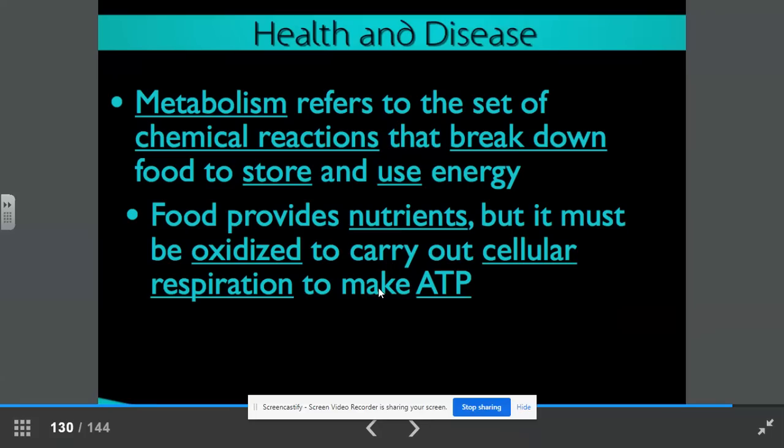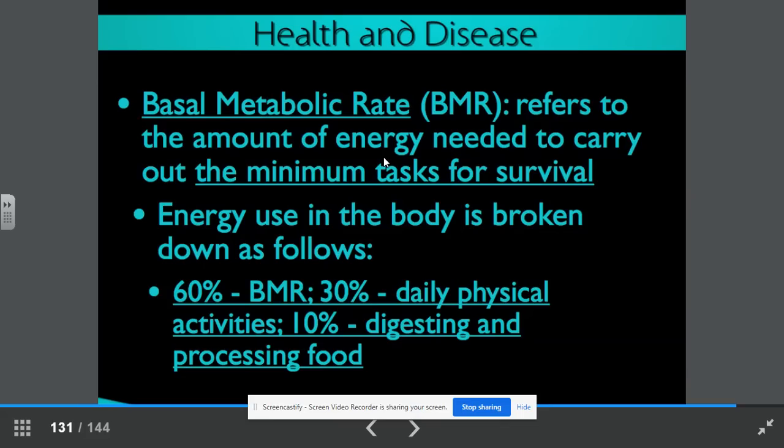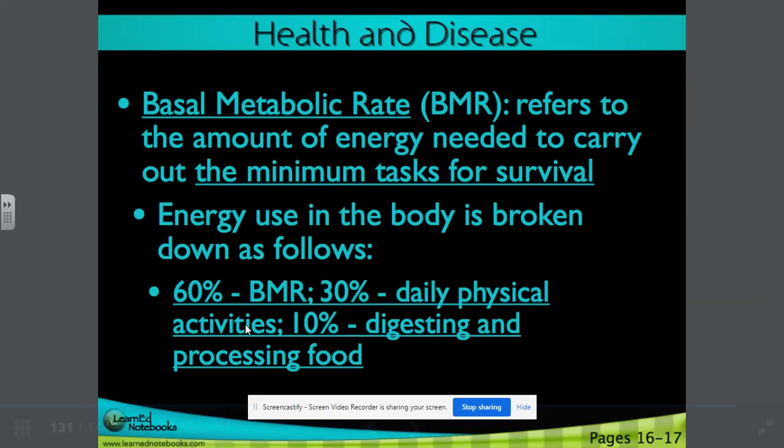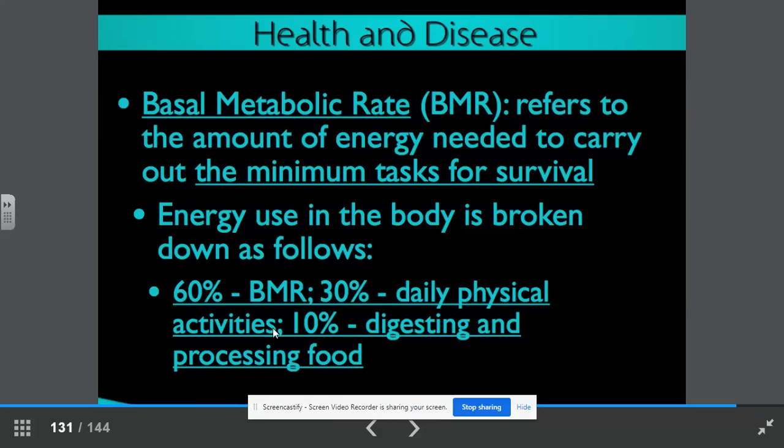Metabolism refers to the set of chemical reactions that break down food to store and to use energy. Food provides nutrients, but it must be oxidized to carry out cellular respiration to make ATP. Remember, adenosine triphosphate. The basal metabolic rate, the BMR, refers to the amount of energy needed to carry out the minimum tasks for survival. Energy use in the body is broken down as follows. Sixty percent is just for our basal metabolic rate, just our basic energy needed for our bodily functions. Thirty percent is our daily physical activities. It's what's needed to get up out of bed, to walk, to take a shower, to do all of the things that we do during the day. And then ten percent is needed for digestion and processing of food.